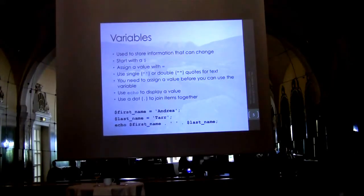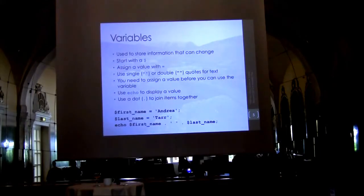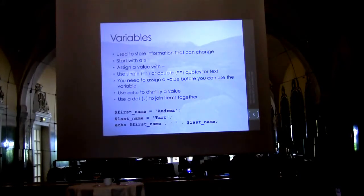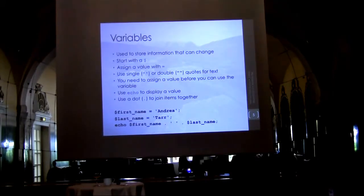Variables are containers that hold values and information that can change. You can recognize them because they start with a dollar sign, and you assign a value with an equal sign. For text you can use either a single quote or a double quote — you can pick whichever you want, except if you're enclosing a quote within a quote, like an apostrophe, in which case you'd use double quotes around it.